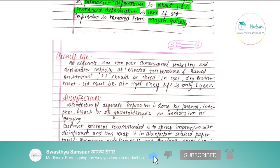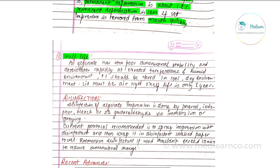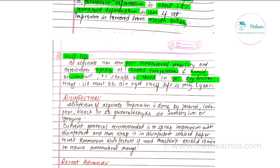Self-life: as alginate has poor dimensional stability and deteriorates rapidly at elevated temperature or in a humid environment, it should be stored in a cool and dry environment with an airtight lid. The shelf life is only about one year.